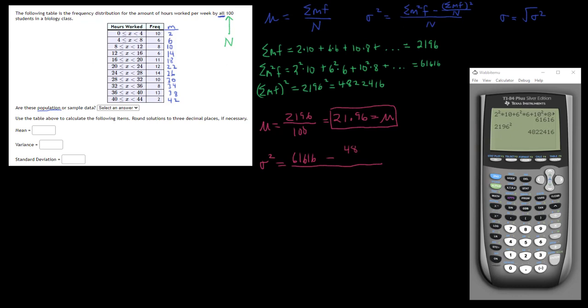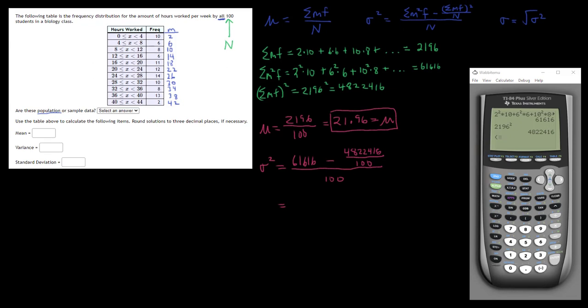Now what about sigma squared? The variance is sigma squared, so we plug into this formula. It says the sum of the M squared F's which is this value here, 61,616, minus the sum of the M F's squared which we calculated to be this really large number, 4,822,416, divided by N, so divided by 100, then the entire thing divided by 100.